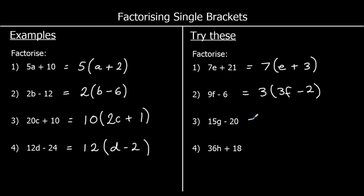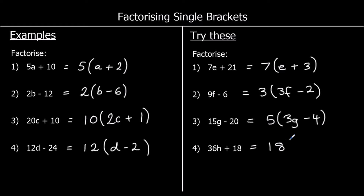Question 3: 15g minus 20. 15 and 20 are both in the 5 times table, so we take 5 outside. 5 times 3g makes 15g and 5 times negative 4 will make negative 20. Question 4: the biggest times table that 36 and 18 are both in is the 18 times table, so we take 18 outside. 18 times 2h makes 36h and 18 times 1 makes 18.